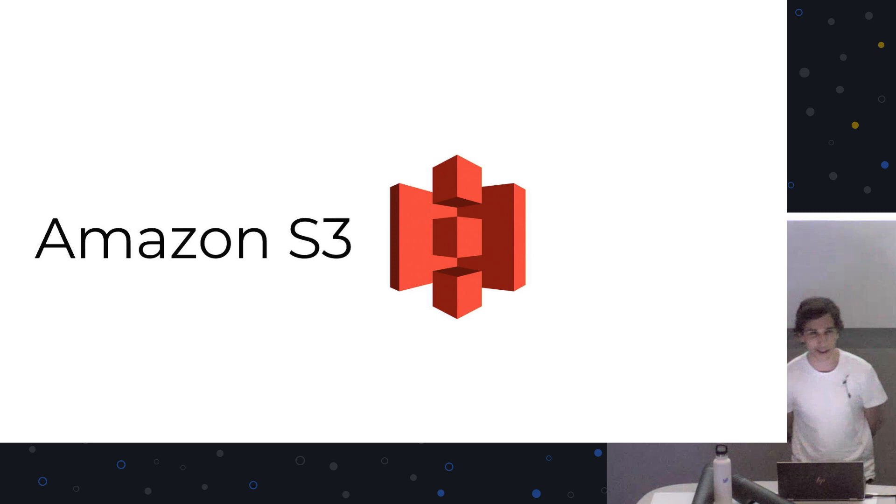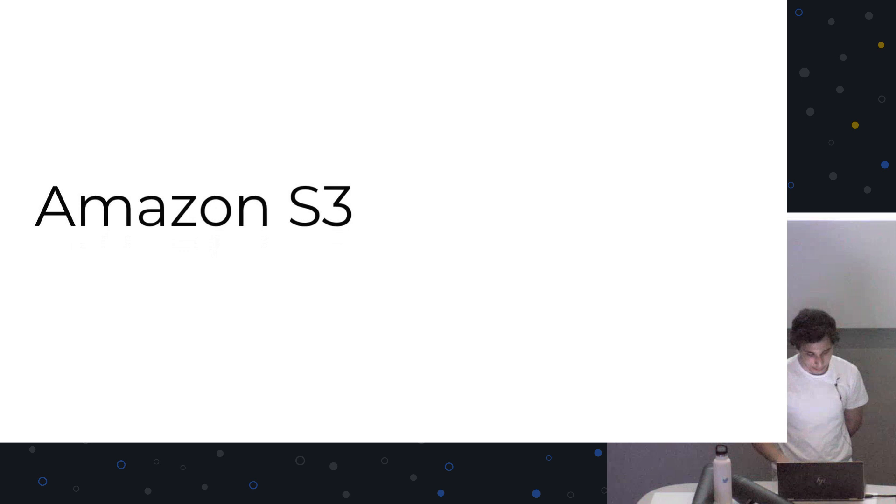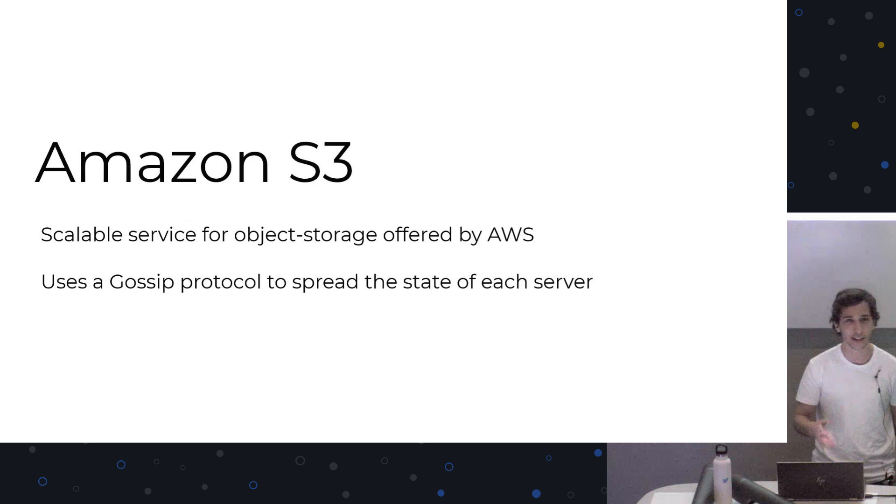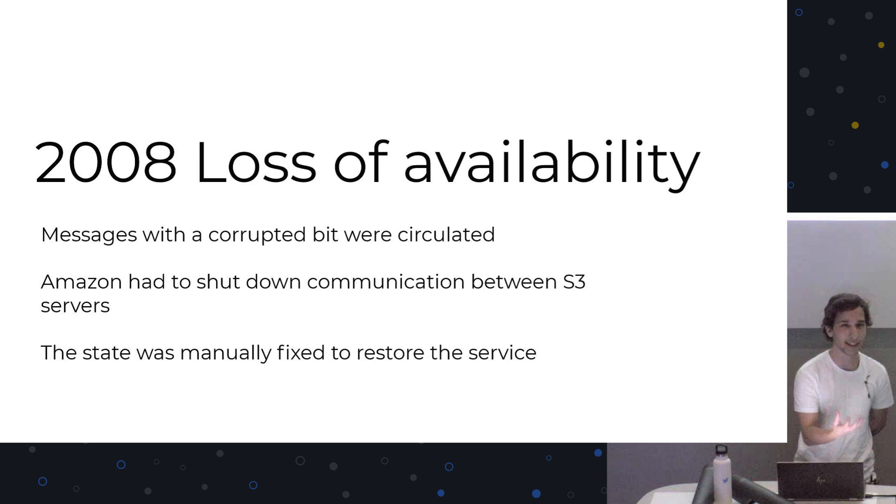There's a real-world example that I want to talk about that touches on why it's not always robust. So Amazon has a service called S3, and Amazon S3 is just a scalable service for file storage. They call it object storage. So it's essentially just a disk in the cloud, but you don't worry about the file structure or directories. You just have a file that's an object, and then you have some data, like maybe store the name, or when the file was created, things like that, some metadata. And they actually use a gossip protocol to spread some information about their servers, maybe how long the server has been up for, or what files it has, things like that. And they use that to spread it among their cluster because it's very scalable. But in 2008, they had a big loss of availability because one of the states in a server got corrupted.